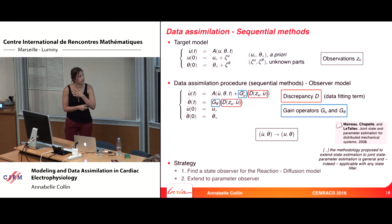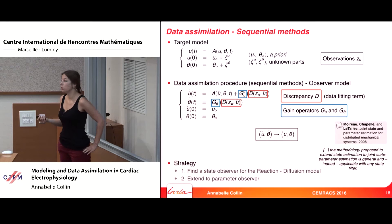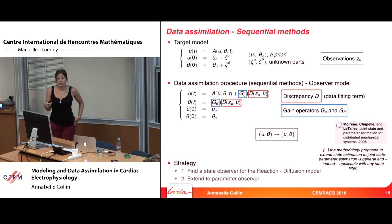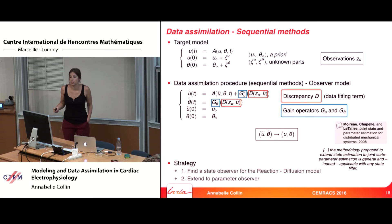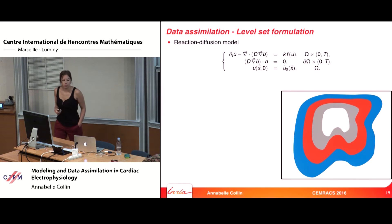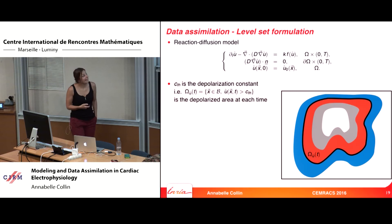This strategy decomposes into two parts: first, find a state observer for the reaction-diffusion model; second, extend it to a parameter observer. The second part is classical and well-presented in the literature — if you have a state estimator, you can directly extend it to a parameter observer. The first point is the difficult one: we need to build a state observer. For now, I will consider that I have an error only in the state, for example in my initial condition.